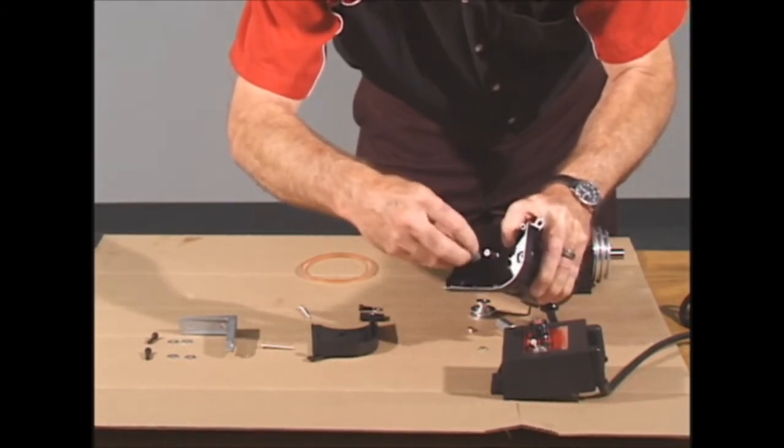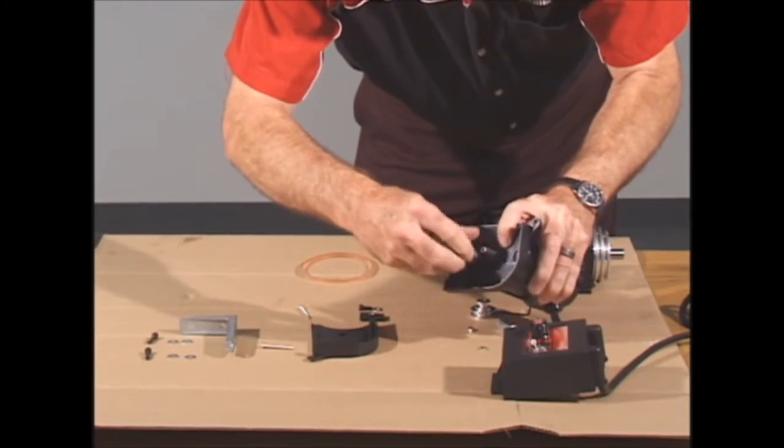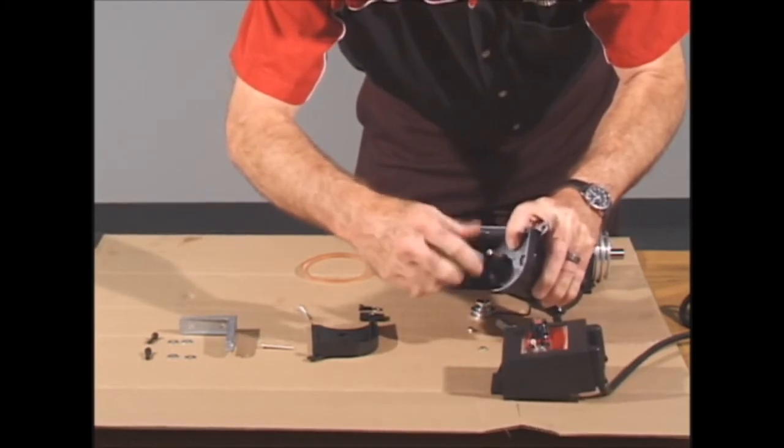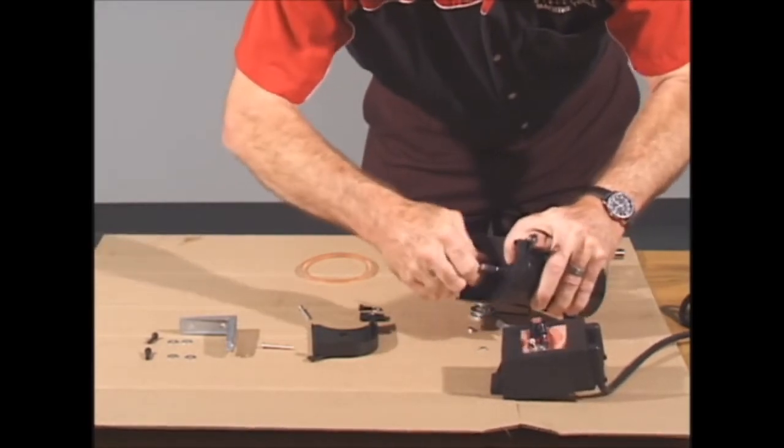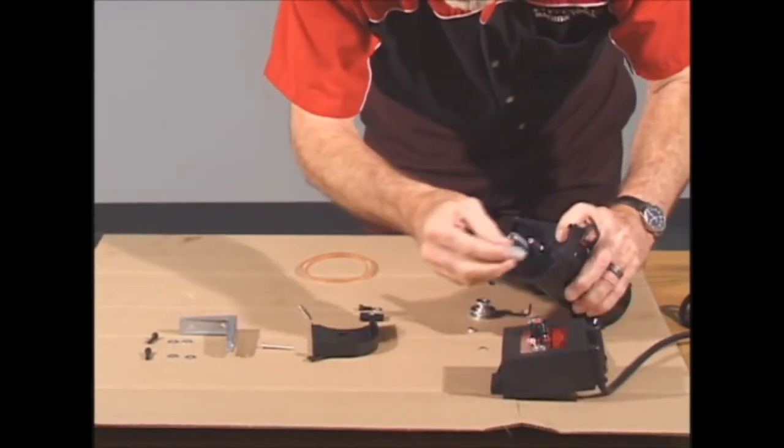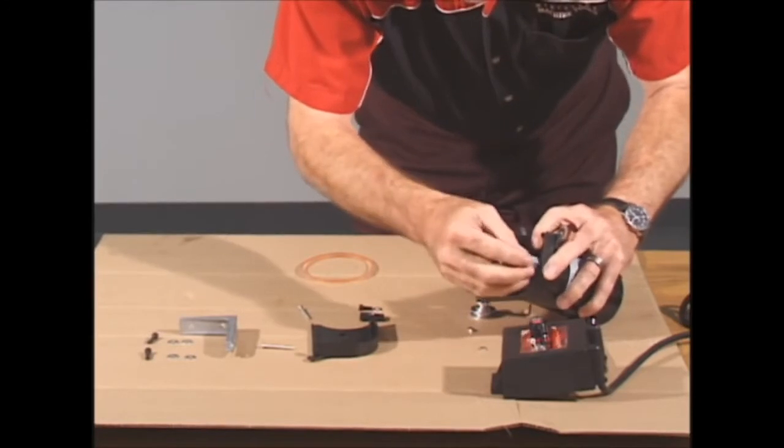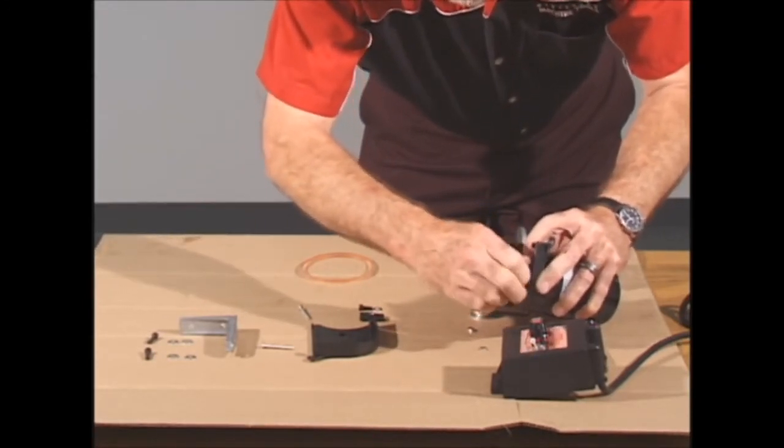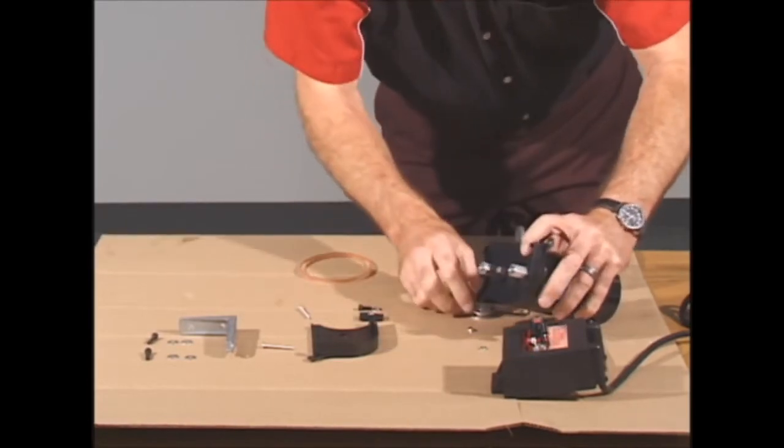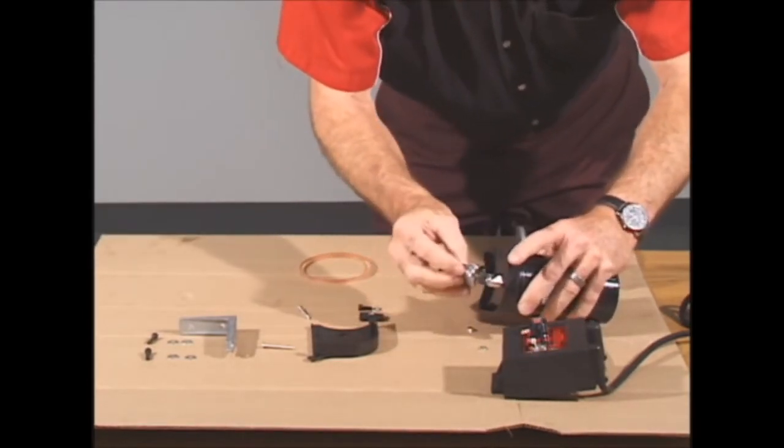There are several holes, so you want to get the belt guard level and thread the threaded end of the standoff into the threaded hole in the motor. It will register on the hole. When you get it lined up, it will register on the hole of the inner belt guard. Then do the same with the other one. Thread it in, get it aligned with the belt guard, and then you can reinstall your motor pulley.